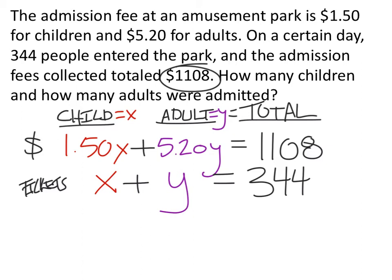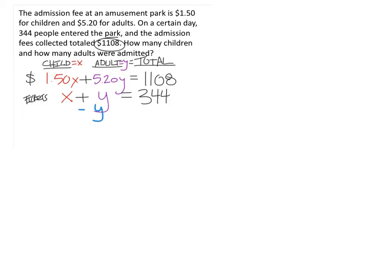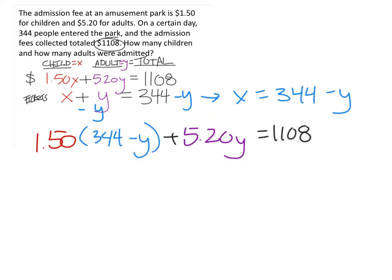This is the setup for our system of equations. You could find common coefficients between the two equations; however, manipulating the ticket equation makes it very easy to use substitution, so that is the method I'm going to use. I'll solve for x by subtracting y from both sides, giving the blue equation: x equals 344 minus y. This gives us something to substitute into the first equation.